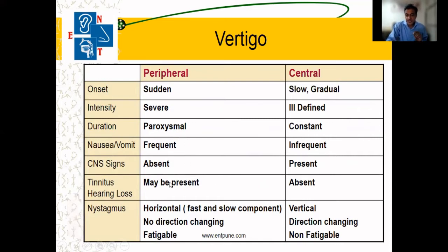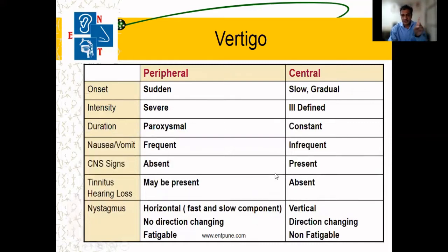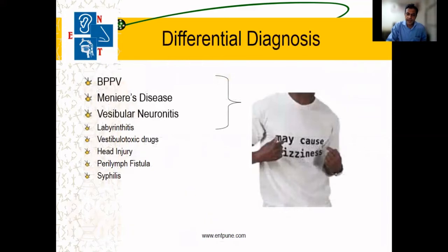In peripheral vertigo, the patient may also have — not always — ringing sound and horizontal nystagmus. If it is a vertical or direction-changing nystagmus, we are dealing with the central cause of vertigo.